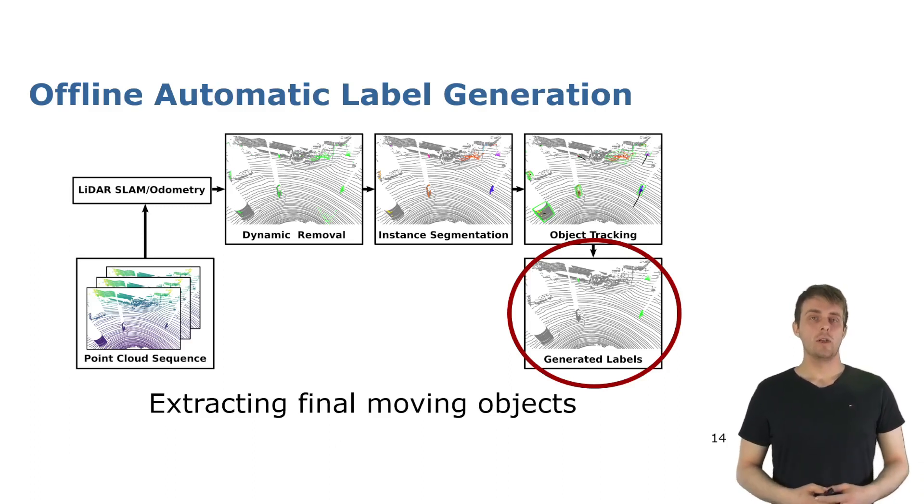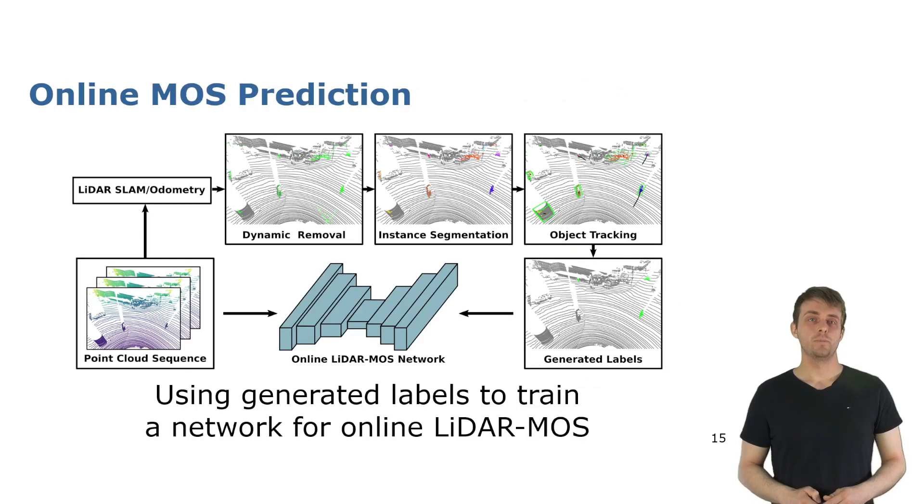So with our method you can record a LiDAR sequence and you do not need to do manual annotation, you can just extract the moving objects. Then use these MOS labels for training a deep neural network, basically a LiDAR MOS network, and in our case we use LMNET which is an online method that works on residual range images.